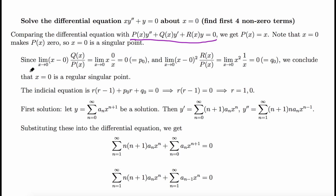Next we want to show this singular point is indeed a regular singular point. In that case we can assume this equation has a series solution. We find the limit as x goes to 0 of x times Q(x)/P(x), which comes out to be 0 — that's P₀. Similarly, the other limit is 0, that's Q₀. Since both limits exist and are finite, x = 0 is a regular singular point.